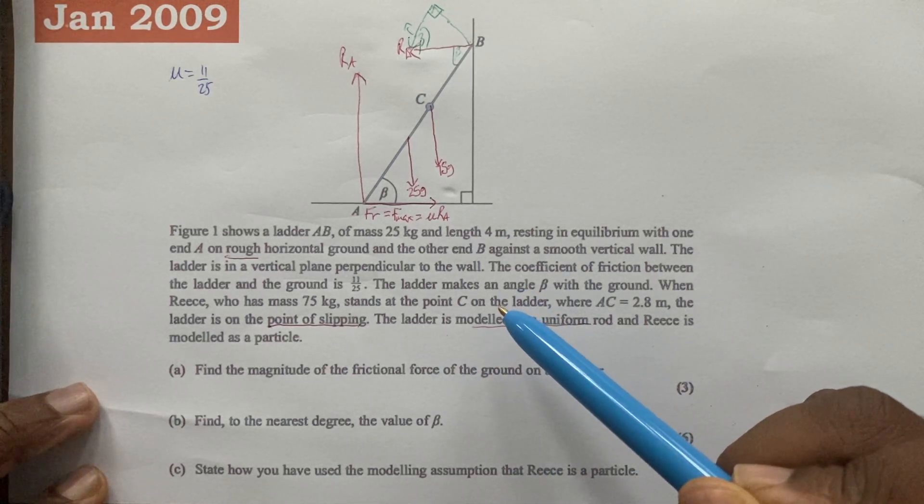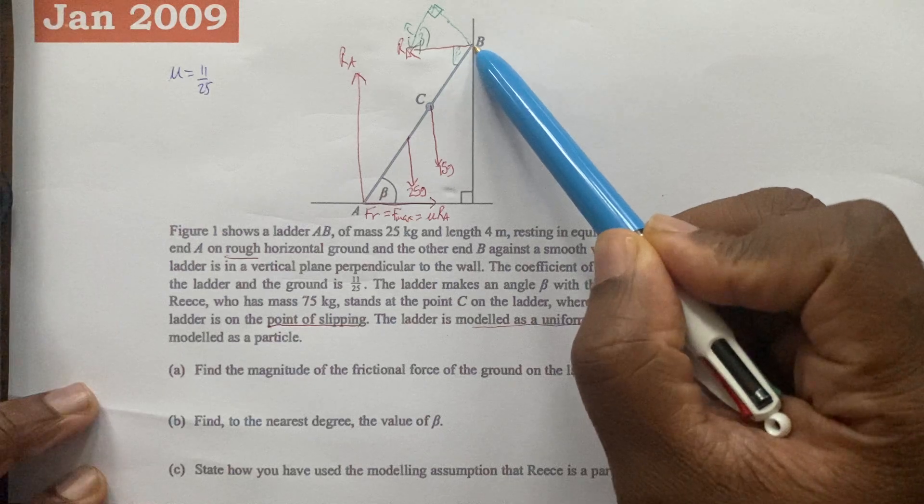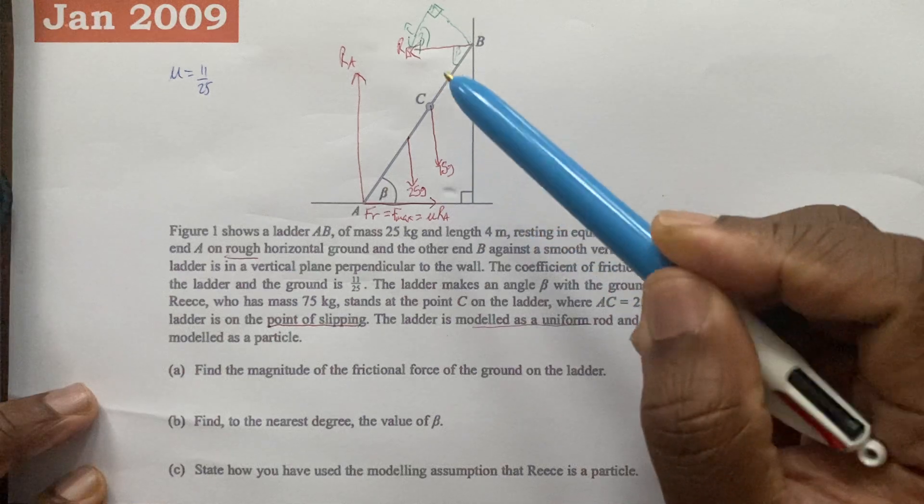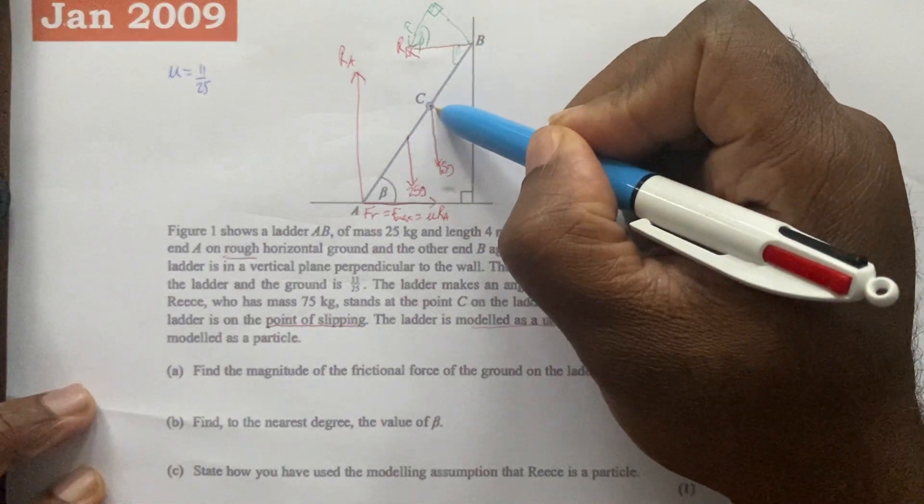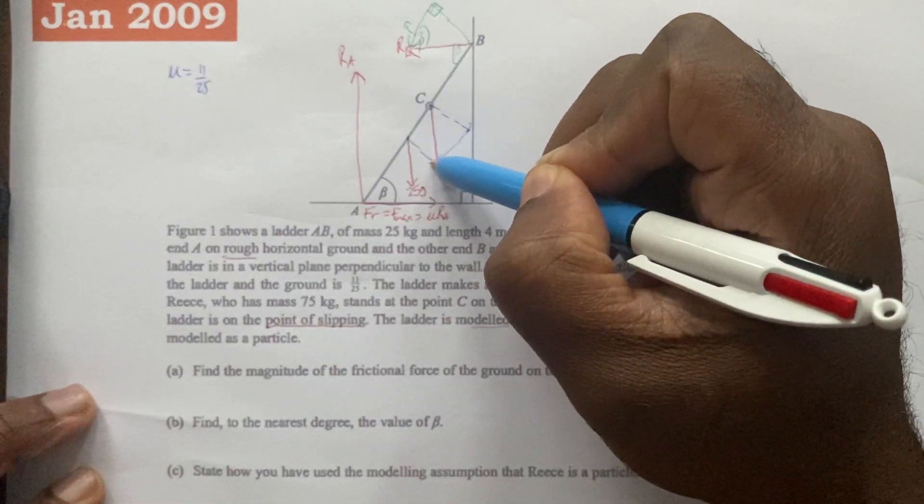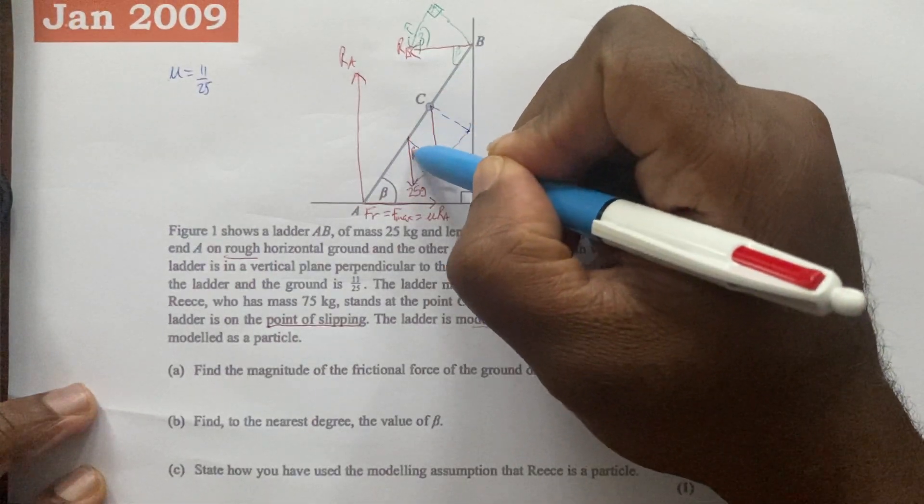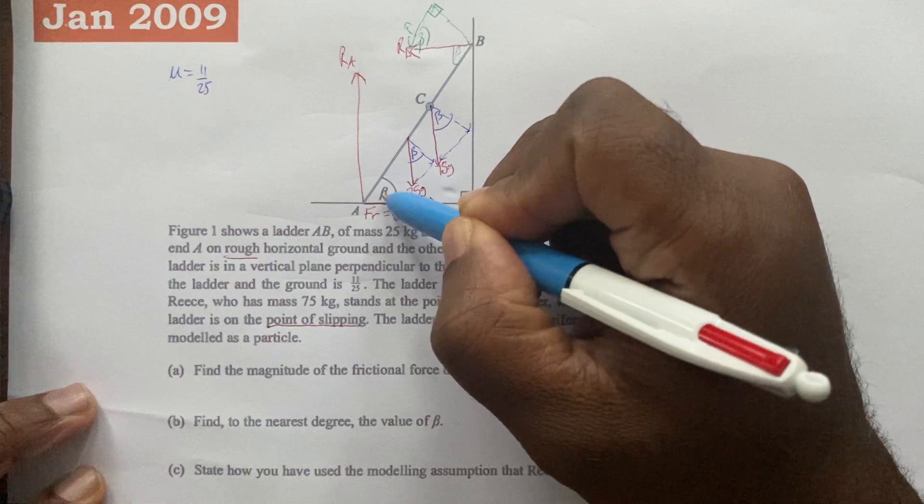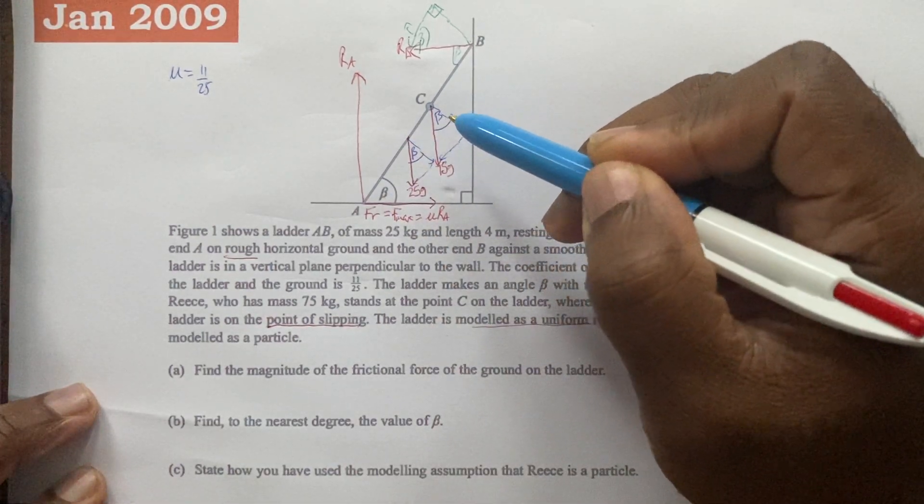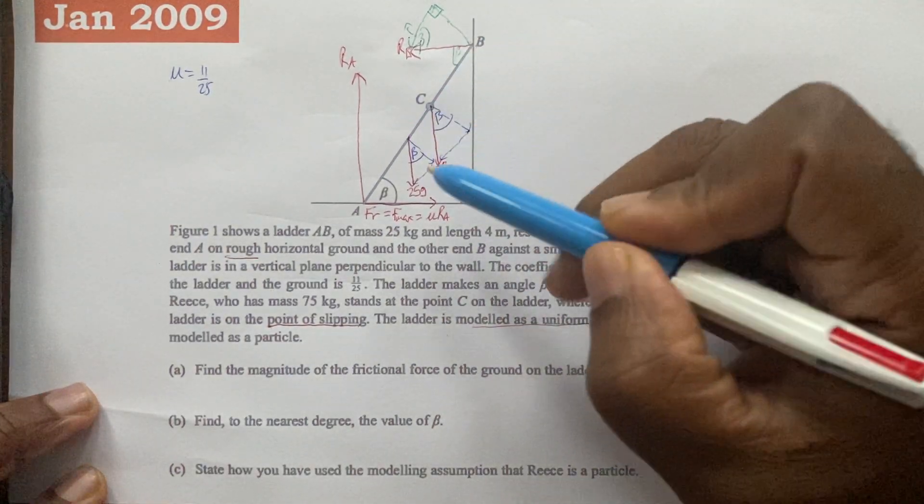What we now want to do is complete step one, which is to identify all of the relevant forces. We have the normal contact force at A, the normal contact force at B, the weight of the ladder, and the weight of Reese. We would resolve the weight here and here, and the angle right here will be the same as the angle right here, so this will be beta and this will be beta as well. Step one is mostly completed.